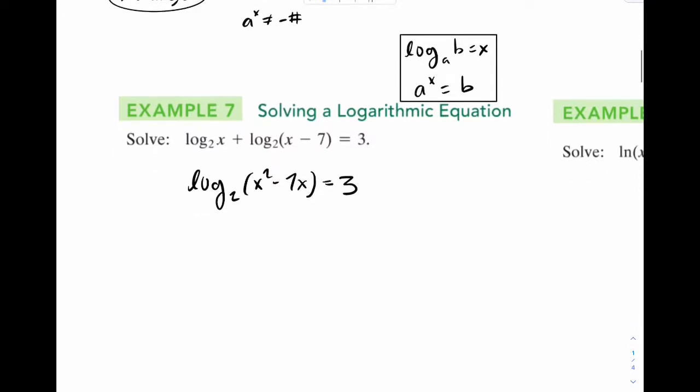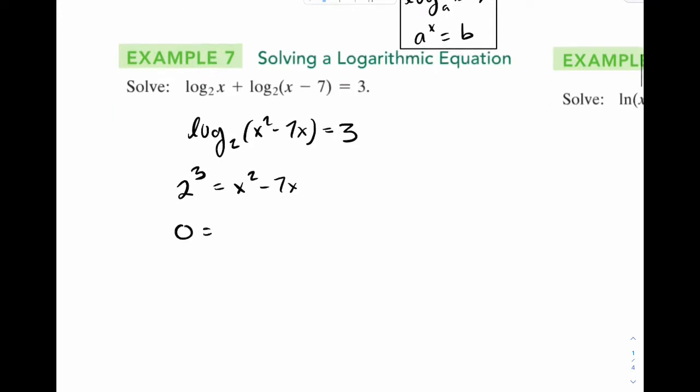Now we're going to convert to exponential form. So 2 to the 3, that's equal to x squared minus 7x. And now it can look pretty familiar. We have a quadratic. Let's move the 8. We factor. And x is equal to 8 and negative 1.